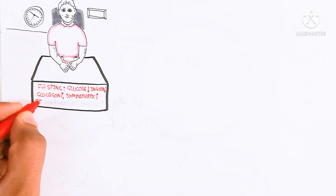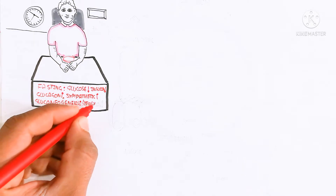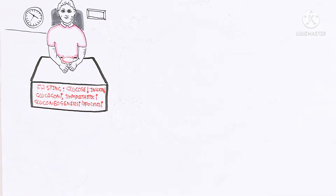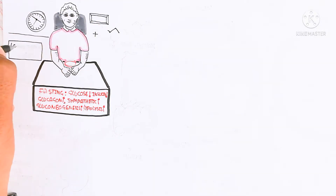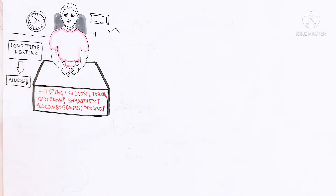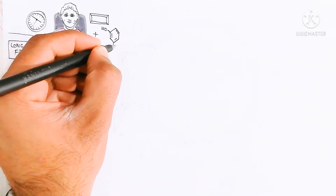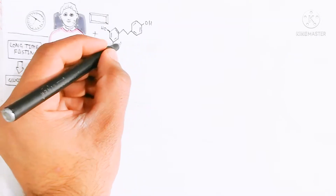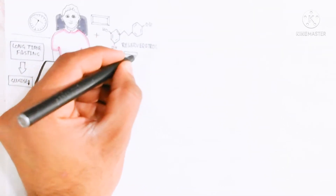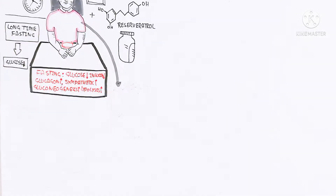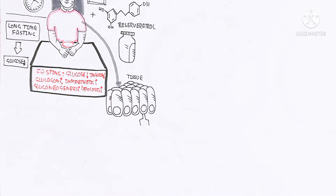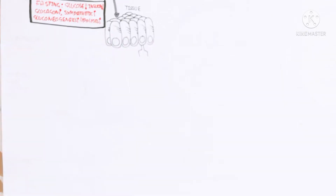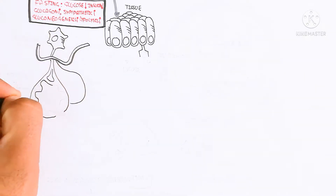Let's begin to understand: fasting decreases glucose and decreases insulin, while glucagon and the sympathetic nervous system trigger gluconeogenesis and lipolysis. Long-term fasting decreases glucose; the sympathetic nervous system will initially not increase but will increase with passage of time. Here we are adding resveratrol, the important compound used during fasting for sirtuin pathway activation.